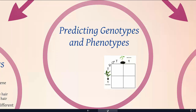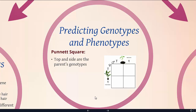Once you understand that you have a set of alleles interacting in a dominant-recessive way, you can actually start to predict genotypes and phenotypes for populations — and this is what Mendel was able to do. We can express this in something called a Punnett square. In a Punnett square, the top and the sides represent the parent genotypes. In this particular case, this is a plant: big T means tall, and little t means short.